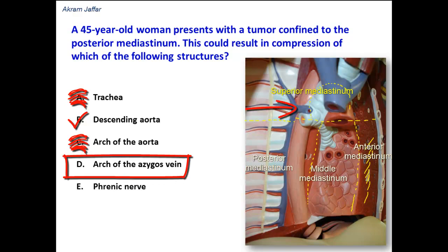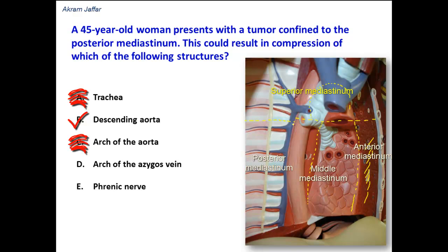Arch of the azygous vein. Here's the azygous vein on the right side, behind the right side of the esophagus. The arch of the azygous vein passes over the root of the right lung, so it is located in the superior mediastinum and opens into the superior vena cava on the right side. The arch of the azygous is located in the superior mediastinum, but the azygous vein itself is located in the inferior mediastinum.